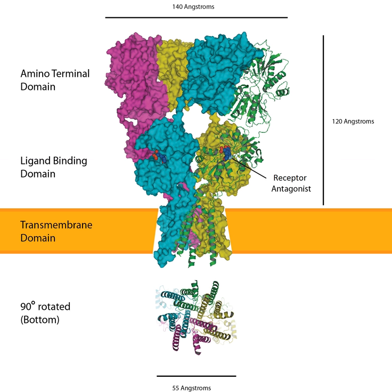NMDARs can open only when depolarization from AMPAR activation leads to repulsion of the Mg2+ cation out into the extracellular space, allowing the pore to pass current. Unlike AMPARs, however, NMDARs are permeable to both Na+ and Ca2+. The Ca2+ that enters the cell triggers the upregulation of AMPARs to the membrane, which results in a long-lasting increase in EPSP size underlying LTP. The calcium entry also phosphorylates CaMKII, which phosphorylates AMPARs, increasing their single-channel conductance.